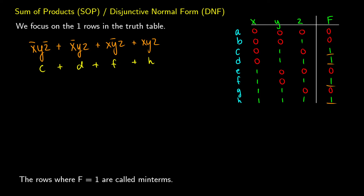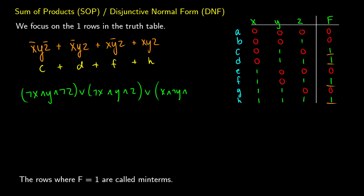In propositional logic — which is the philosophical logic side, while sum of products is the digital logic side — these look a little different. For c: not-x and y and not-z. Or for d: not-x and y and z. Or for f: x and not-y and z. Or x and y and z for the last one. You can see why this is called disjunctive normal form: each term is separated by an or sign — the disjunction.